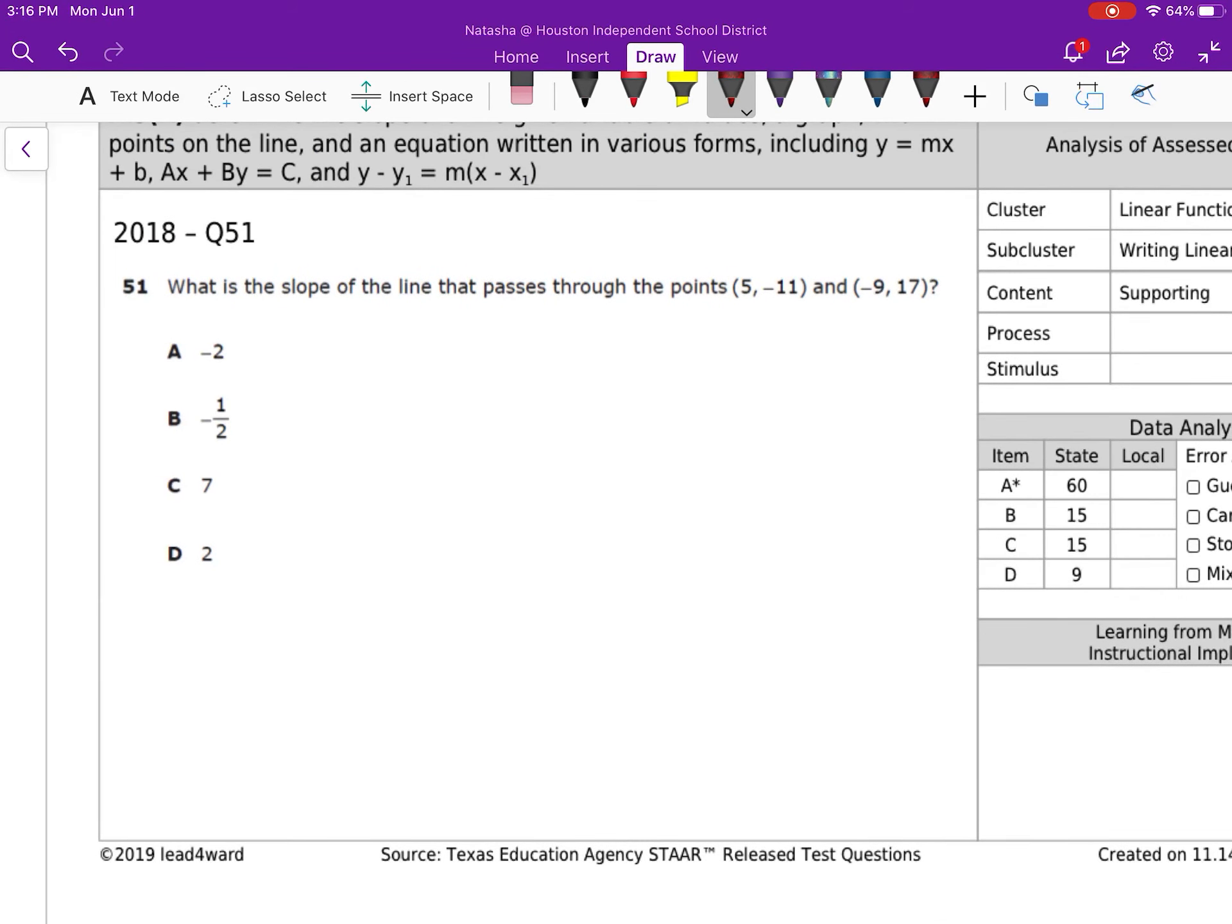What is the slope of the line that passes through these two points? Now we need to use the slope formula. Slope formula is going to be y minus y over x minus x. This is x, this is y, this is x, this is y. This is going to be 17 plus 11 because a minus and a minus make a positive, over negative 9 minus 5.